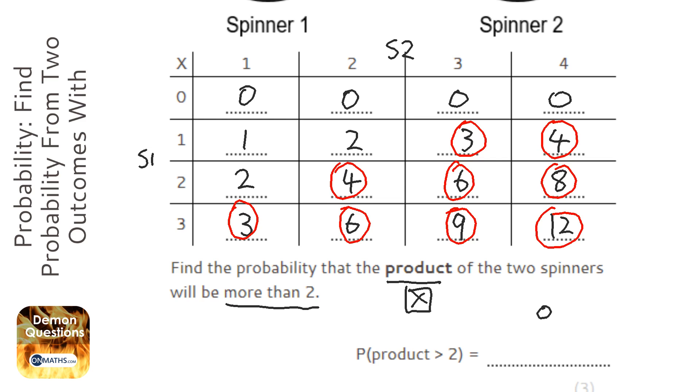So nine will be on the top of my fraction when I show the probability. And what we need to do is put that over the total amount, including the nine we circled.